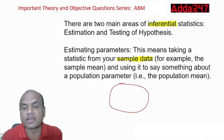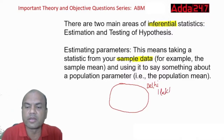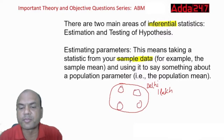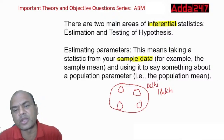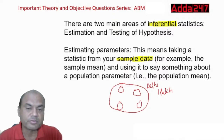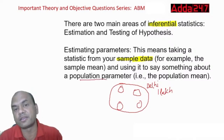Suppose this is my state — let's say Delhi. I have to do a survey of one lakh people in Delhi, but that's not possible. So I'll take samples from four corners of Delhi. Suppose I require the average salary of Delhi — it's not possible to go to every house. So I'll take samples from different corners, find out the salaries, and apply that to say something about the entire population of Delhi. That's what estimation is.